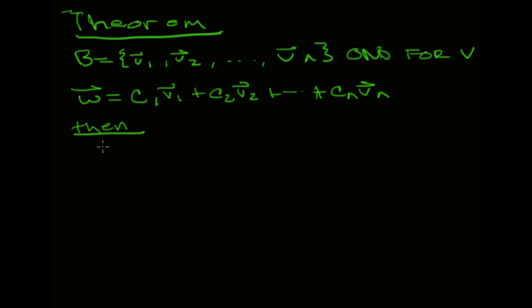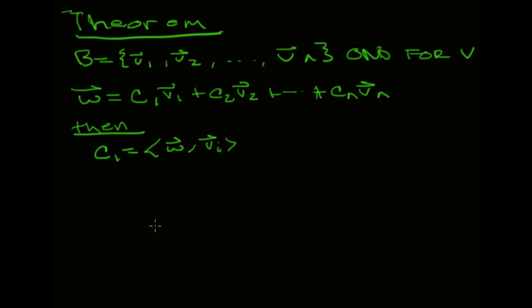So if this is, in fact, an orthonormal basis, then finding these coefficients is actually really easy. I just take the inner product of W with the vector that I need the coefficient for. That seems a little too easy to get these coefficients — this only works, though, if I have an orthonormal basis.